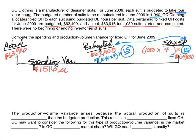The difference between pegs two and three is $2,400. We call this the production volume variance. To determine if it's favorable or unfavorable, we focus on production: did we produce more or less than we thought? We budgeted 1,040 suits and actually produced 1,080 suits, so production is higher than budgeted — making this a favorable variance.